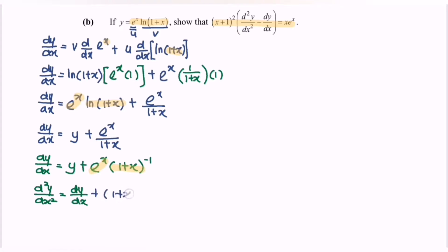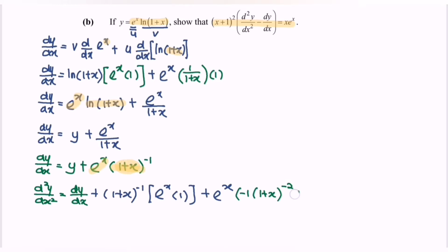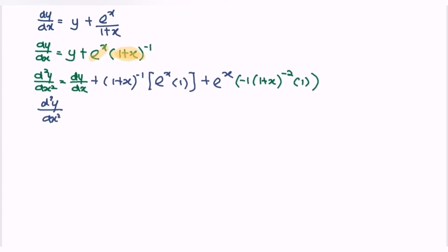Applying the product rule: first term is (1 plus x)^(−1) times the derivative of eˣ, which gives eˣ. Second term is eˣ times the derivative of (1 plus x)^(−1). Differentiating (1 plus x)^(−1) gives negative 1 times (1 plus x)^(−2), multiplied by the derivative of (1 plus x), which is 1. Rewriting, the second derivative equals dy/dx plus eˣ over (1 plus x) minus eˣ over (1 plus x) squared.